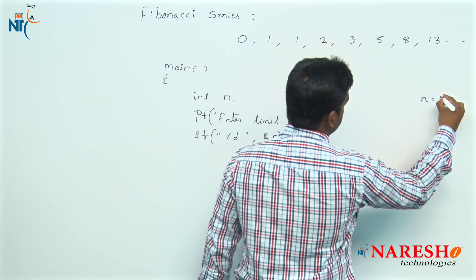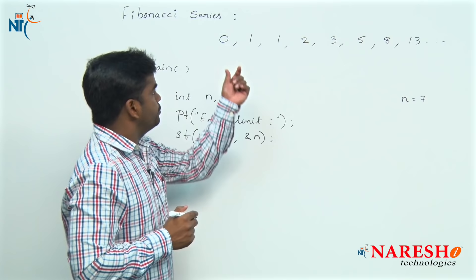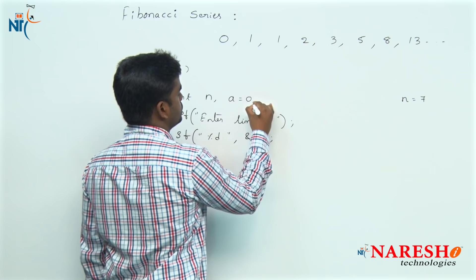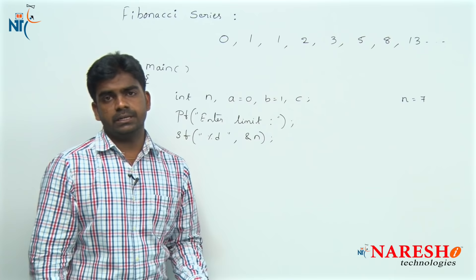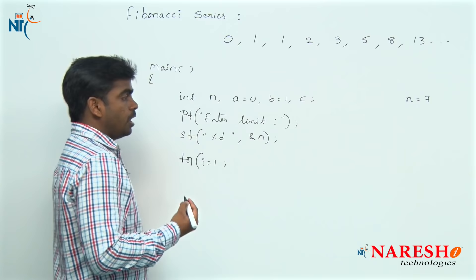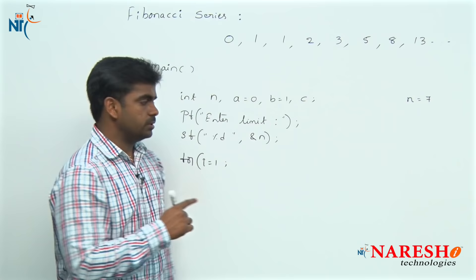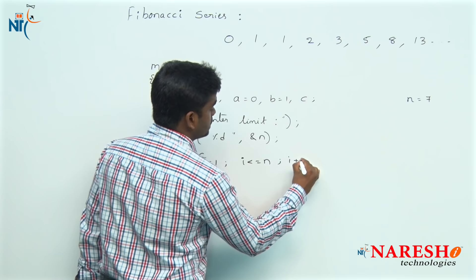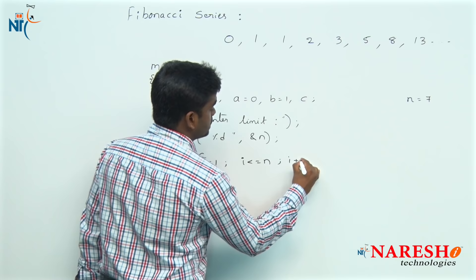Consider n value is 7. First, take the first two elements of the series into variables: a equals 0, b equals 1, and c as a temporary variable. We always need to print the a value. Then we repeat the loop — i starts from 1, condition i is less than or equal to n, i increment.